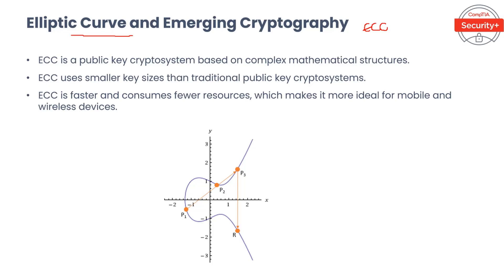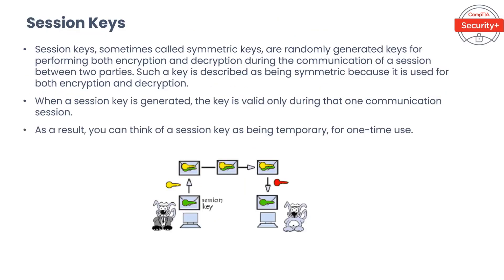Let's talk about elliptic curve cryptography (ECC) and emerging quantum cryptography. ECC is a public key cryptosystem based on complex mathematical structures. ECC uses smaller key sizes than traditional public key cryptosystems; as a result, it is faster and consumes fewer resources, making it more ideal for mobile and wireless devices. Unlike ECC, quantum cryptography does not rely on mathematics — instead it relies on physics. Its primary advantage is security. Quantum mechanics protects against data disturbance because no one can measure the quantum state of the photons; the mere observation of a quantum system changes the system.